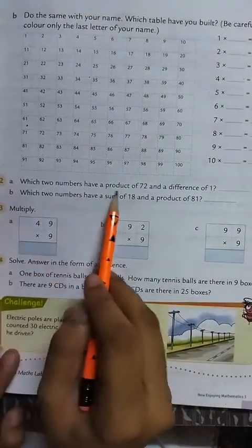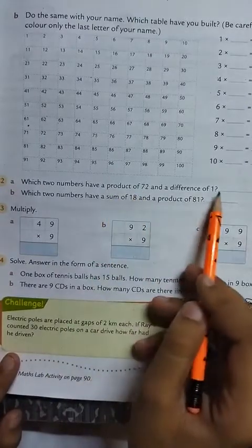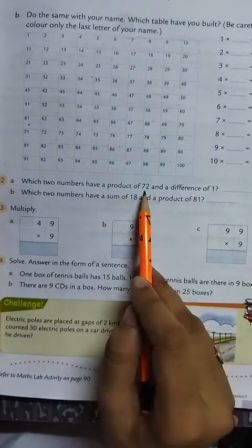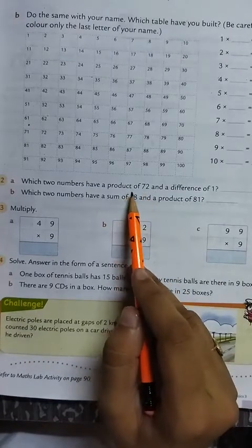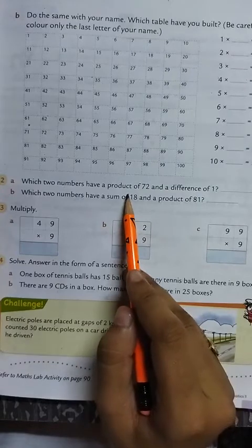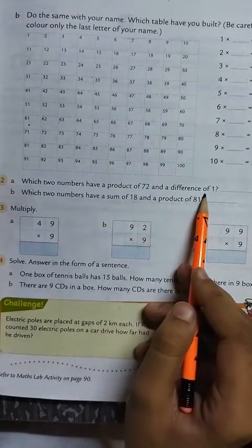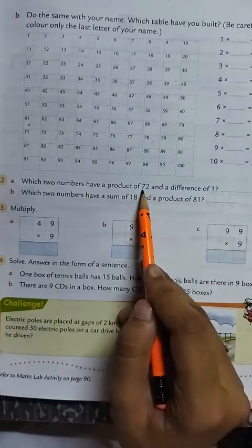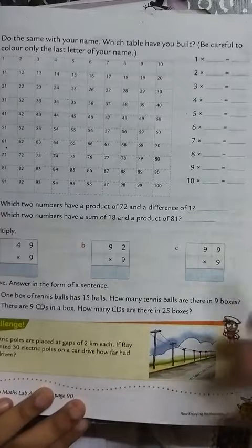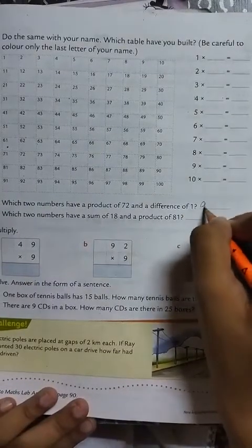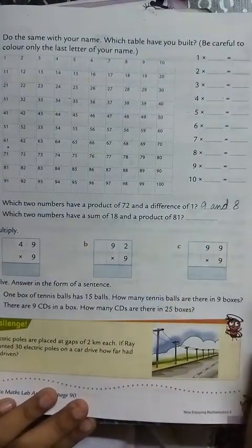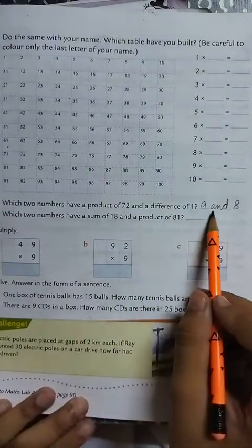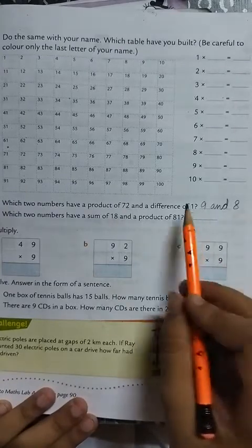Question 2, which two numbers have a product of 72 and a difference of 1? So which two numbers, if multiplied, the answer is 72. Product means when two numbers are multiplied, it's 72, and difference means when we subtract, the answer is 1. So when we multiply 9 and 8, the answer is 72, and when we subtract 9 minus 8, the answer is 1.